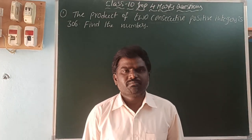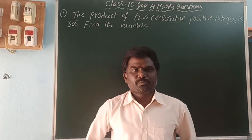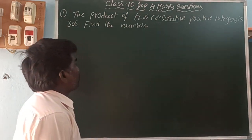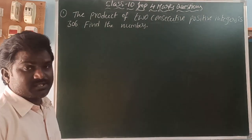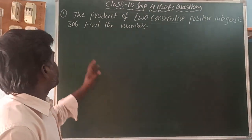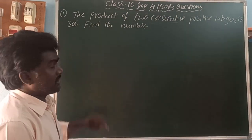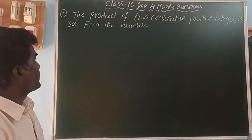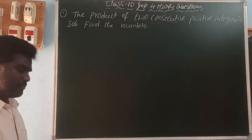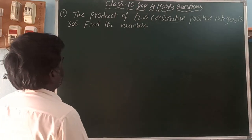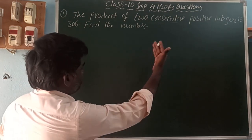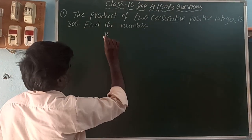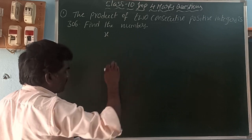Hi, hello, welcome back to our YouTube channel. This is Balakrishna. In this video I am going to explain some important questions. The first one: the product of two consecutive positive integers is 306, find the numbers. Let the first positive integer be x; its consecutive means the next number.